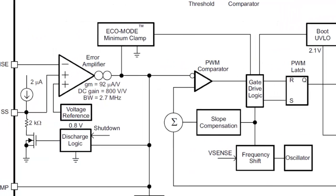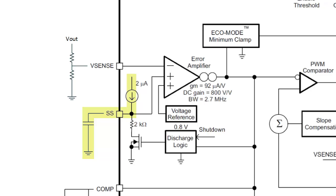A capacitor connected to the slow start pin is charged by an internal current source, preventing the output voltage from overshooting during power-up. The slow start is reset by discharging the capacitor during a shutdown.